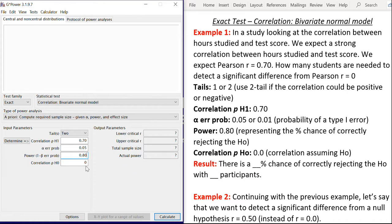And the last step here is correlation p H0. This is the Pearson r value assuming the null hypothesis is true, and that's the value that we're testing our expected correlation against. In most cases this will be a value of 0. Okay so we've got our information entered, all we have to do is come in here and click on calculate.